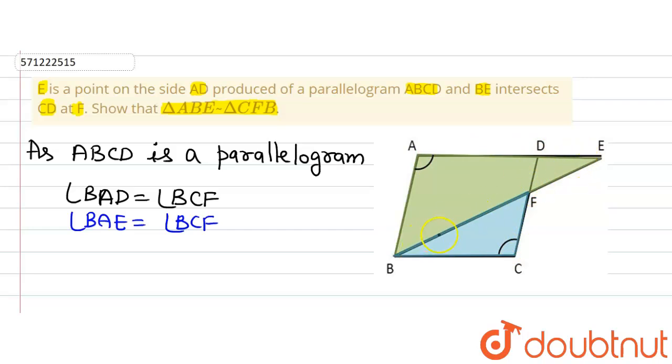so angle AED and angle FBC, that is angle AED, this angle, and angle FBC, this angle, are alternate interior angles. And because AE is parallel to BC, so we can say that angle AEB will be equal to angle FBC, because alternate interior angles are equal.